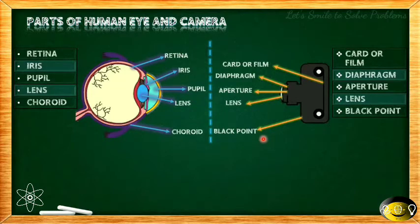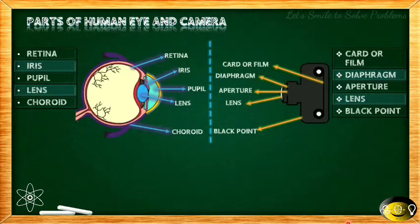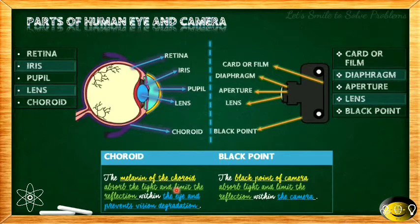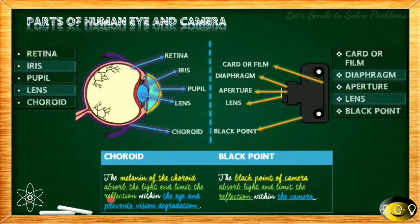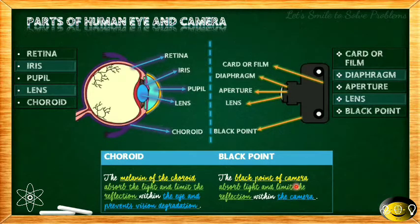The choroid and the black point are the remaining parts. The melanin of the choroid absorbs light and limits reflection within the eye, preventing vision degradation. Light enters from the pupil and the choroid ensures reflection is limited so the eye's vision does not degrade. The black point of the camera does the same thing — it absorbs light and limits reflection within the camera.